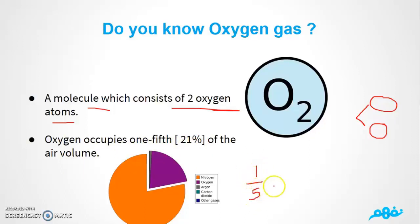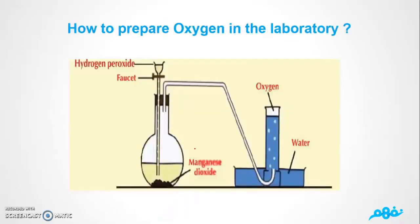So you could write in the exam one fifth or 21% to represent the percentage of oxygen. Oxygen occupies one fifth of the atmosphere, or 21% of the air volume. Now we're going to talk about how to prepare oxygen in the lab.